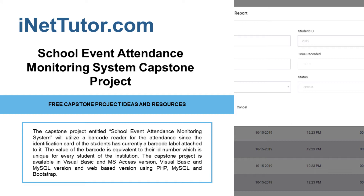The capstone project entitled School Event Attendance Monitoring System will utilize a barcode reader for attendance, since the identification card of the students currently has a barcode label attached to it. The value of the barcode is equivalent to their ID number, which is unique for every student of the institution. The capstone project is available in Visual Basic and MS Access version, Visual Basic and MySQL version, and web-based version using PHP, MySQL, and Bootstrap.